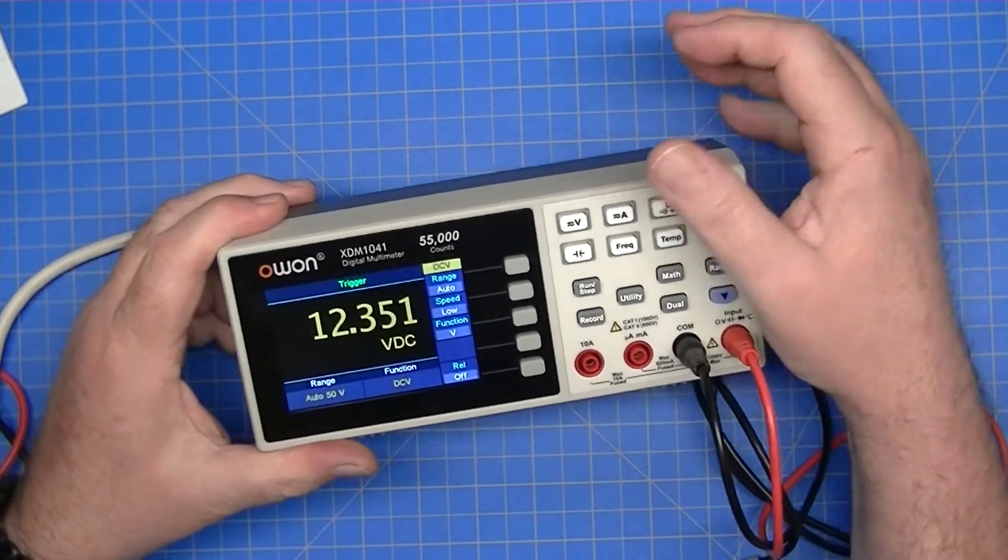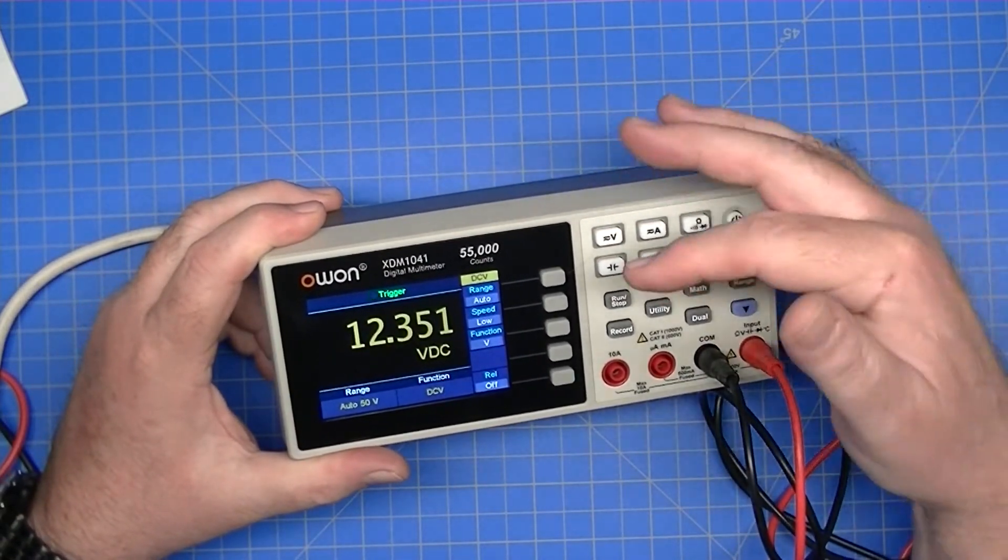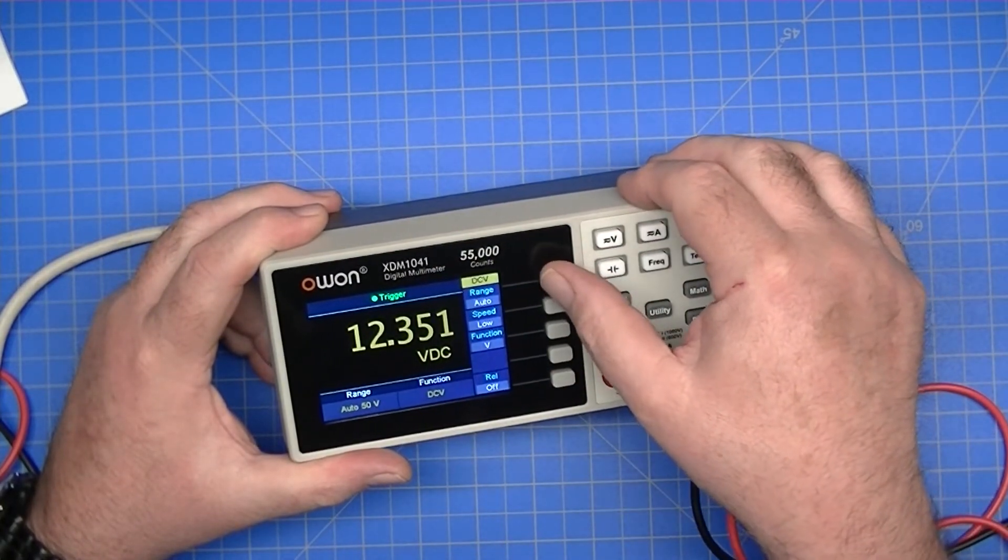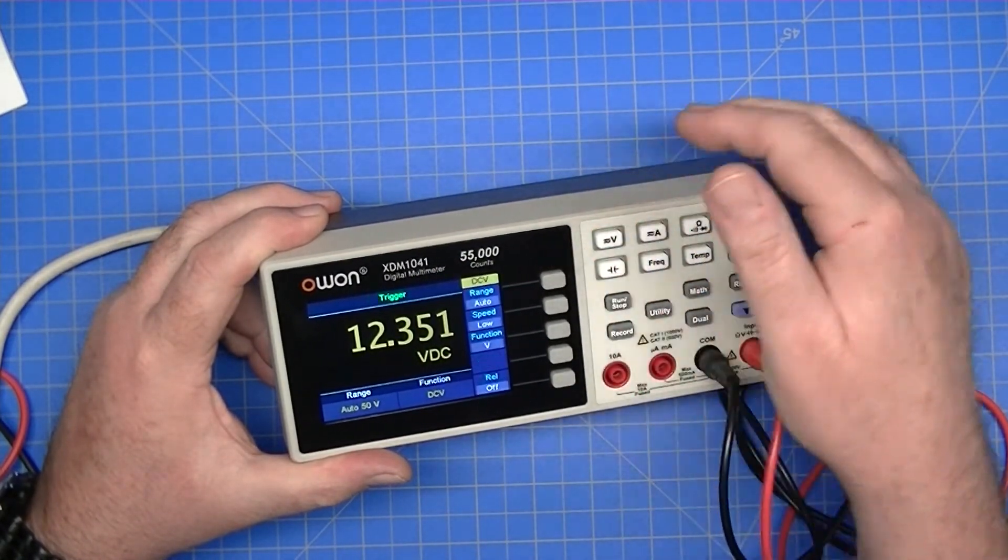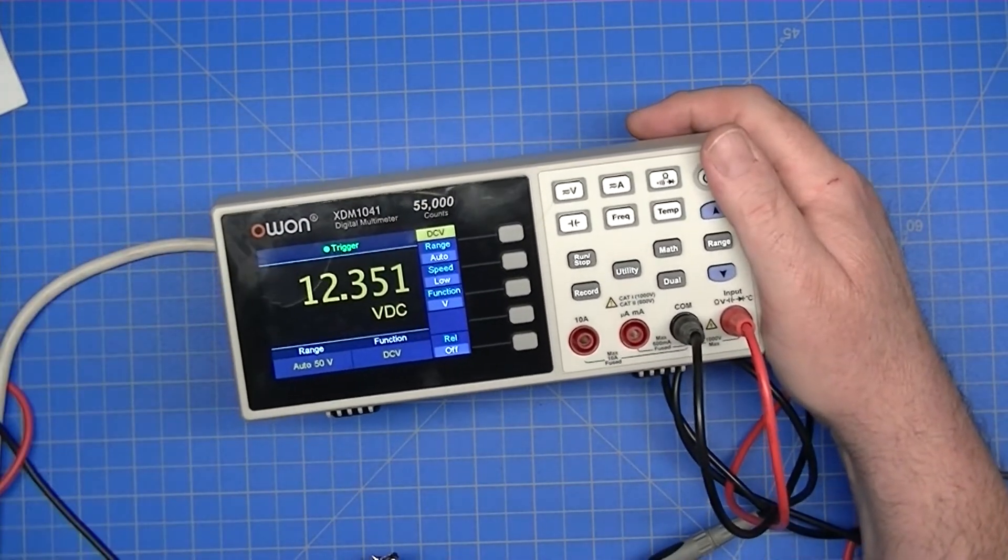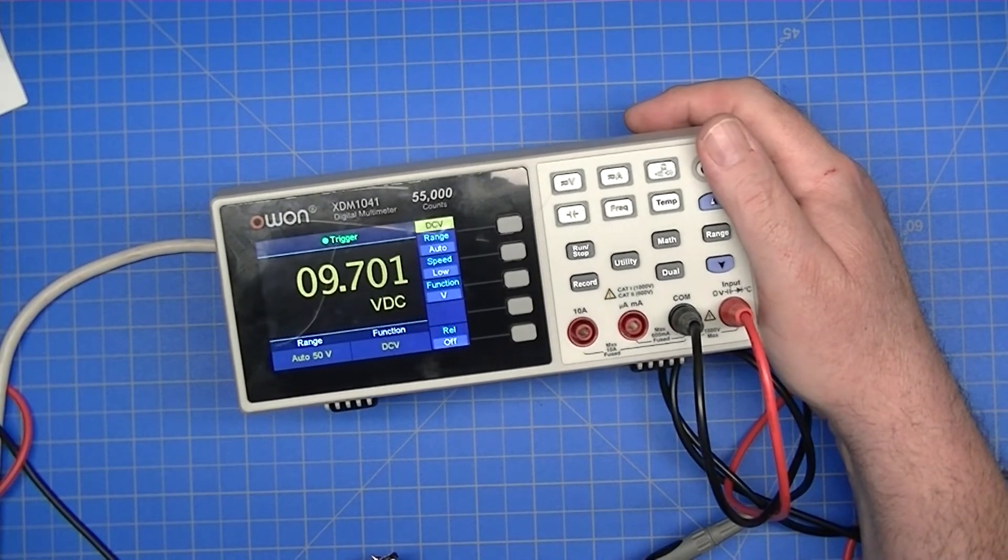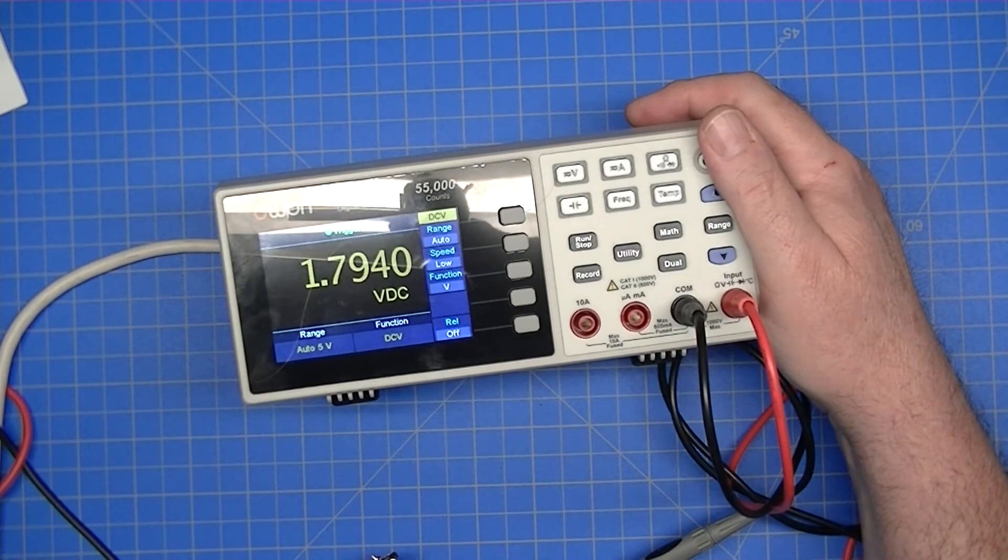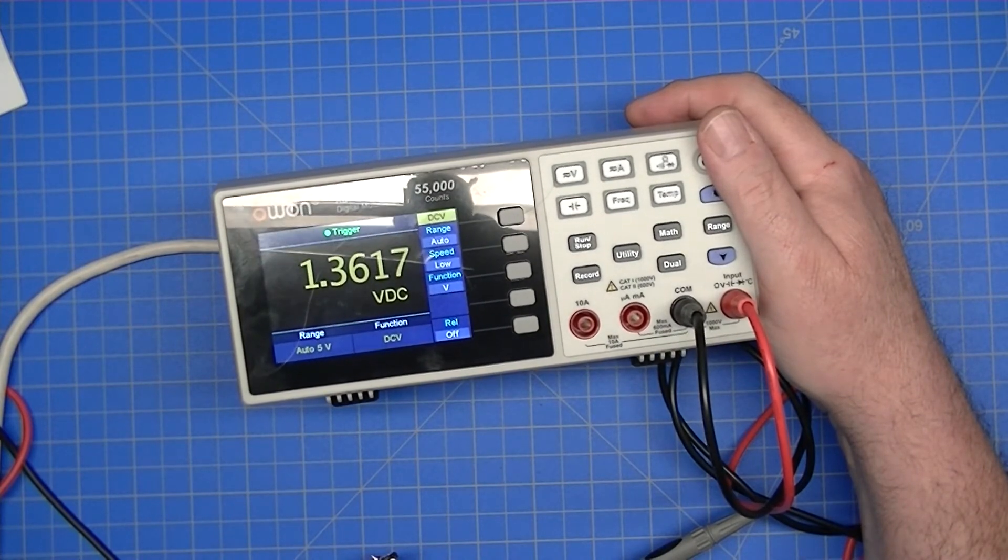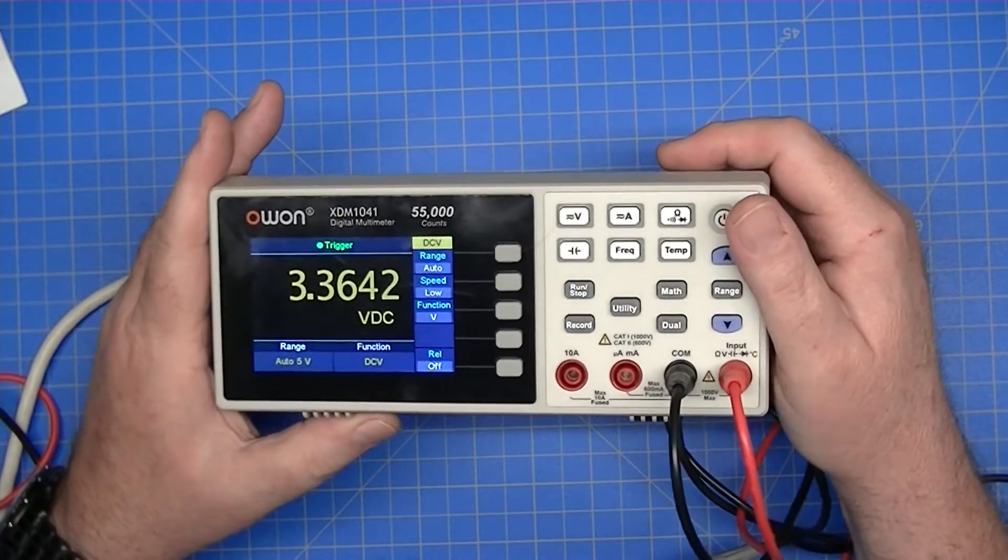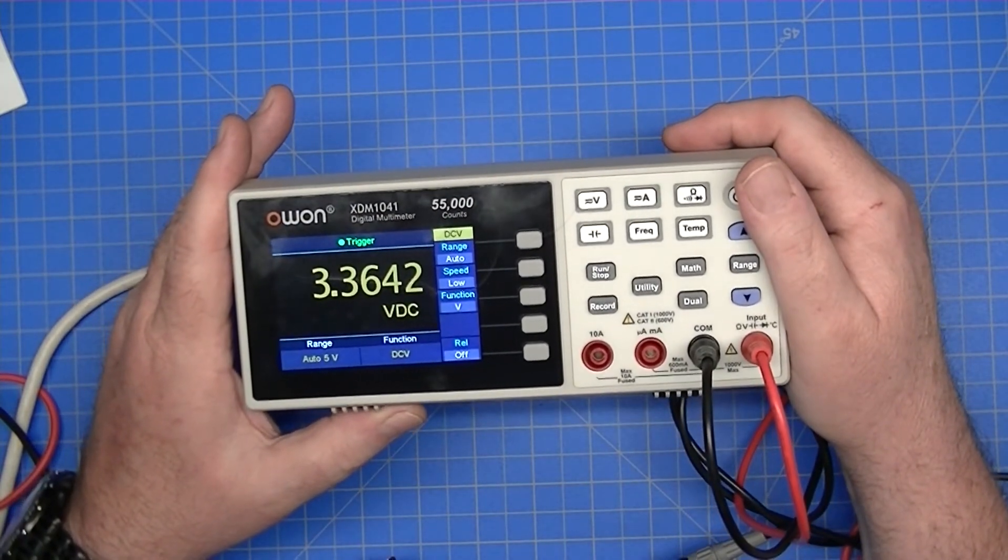And so it does auto range. You can also fix the range. I have it on auto 50 volt. I can just come down here and tell it auto, and it automatically picked the voltage. And as I adjust the voltage on the power supply, of course, it's going to adjust the voltage on the meter.